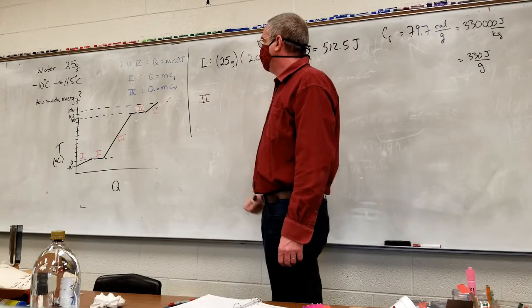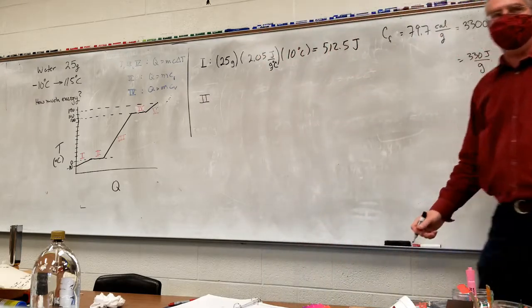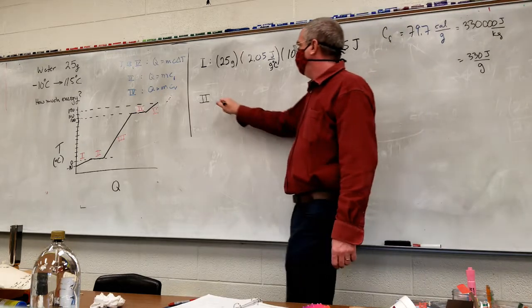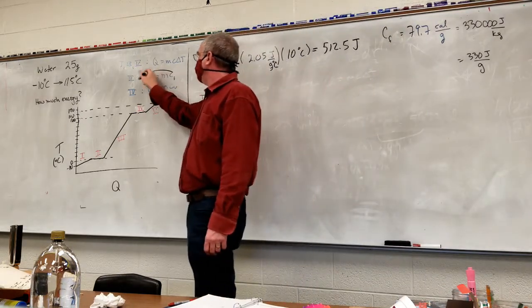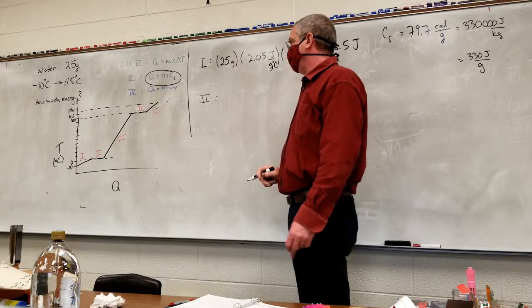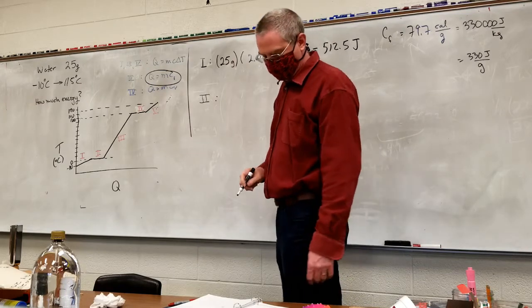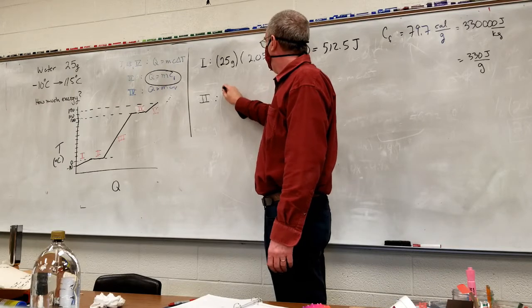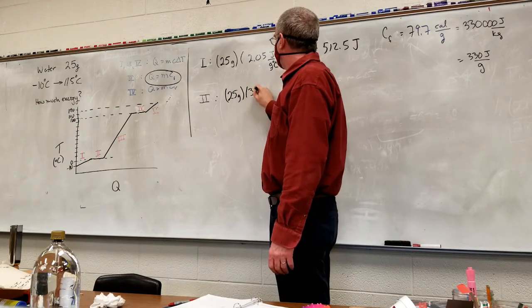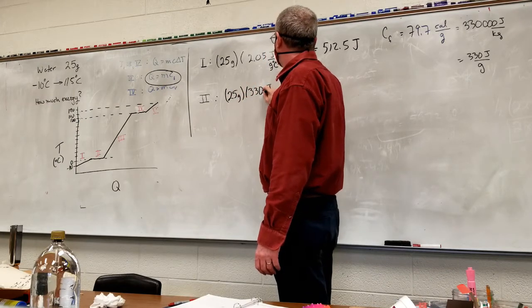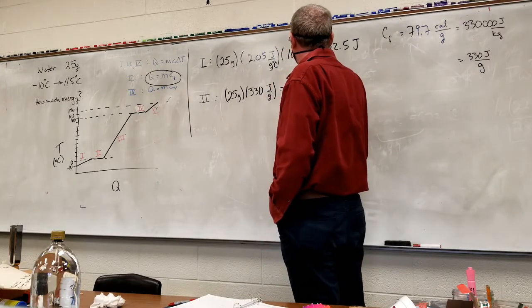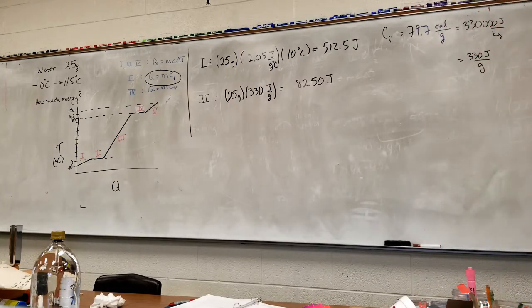Phase 2, the part where all I'm doing is melting the ice. I'm dealing with this formula right here, mass times the latent heat of fusion. So it's 25 grams times 330 joules per gram. So it takes significantly more energy to melt it than it does to raise the temperature.